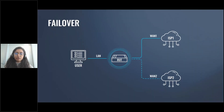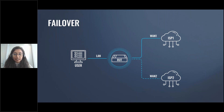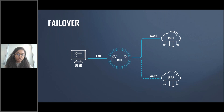Failover is a feature in Teltonika routers that provides a mechanism for automatic switching between different internet connections to maintain network connectivity in case of a primary connection failure. It ensures that your network remains online and accessible even if the primary internet connection becomes unavailable. Here in the picture you can see how WAN 1 and WAN 2 connections have been made, no matter if they are from the same provider or a different provider.